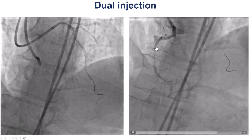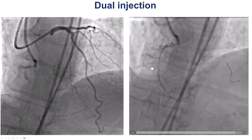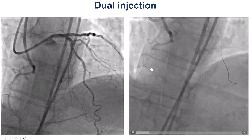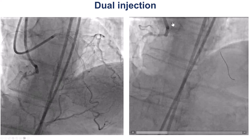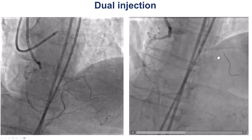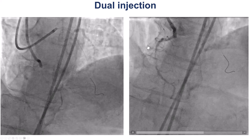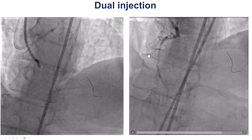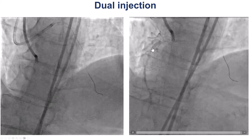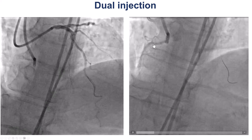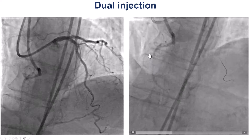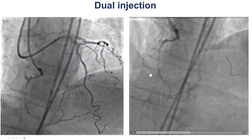Nevertheless, she was referred for percutaneous coronary intervention and we did have contralateral injection, because flow can be compromised when we try to get through a high-grade lesion like this.